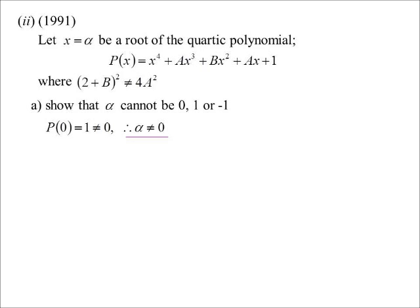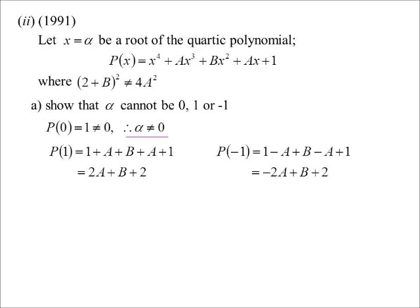1 and minus 1 is a little bit trickier. If I sub in 1, I get 2A plus B plus 2. So, as I don't know what A and B are right now, I don't know whether that's 0 or not. So, I'll sub in minus 1. And minus 1, I get minus 2A plus B plus 2.